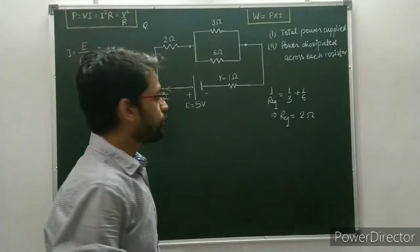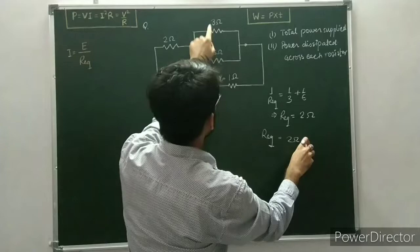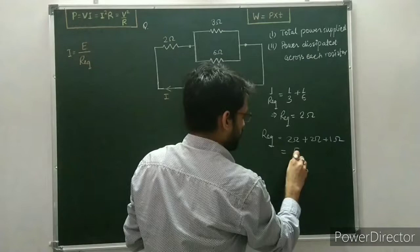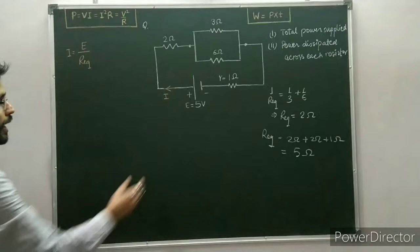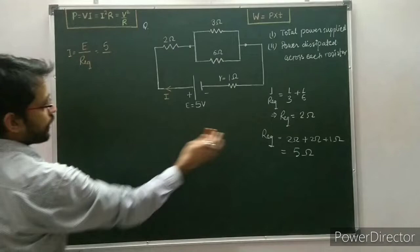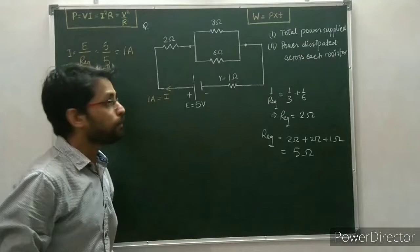There is also a 1 ohm in series, so the total equivalent resistance is 2 + 2 + 1 = 5 ohm for this circuit. The EMF is 5 volts, so the current I = EMF / R_eq = 5 / 5 = 1 ampere. So 1 ampere current is drawn from the cell.